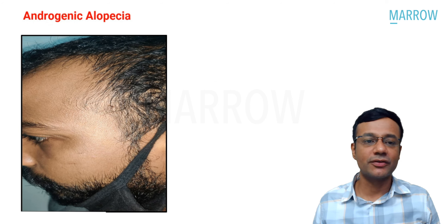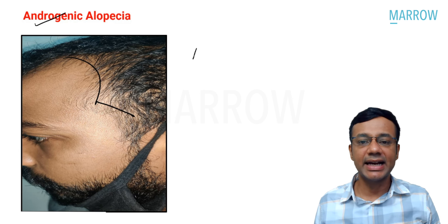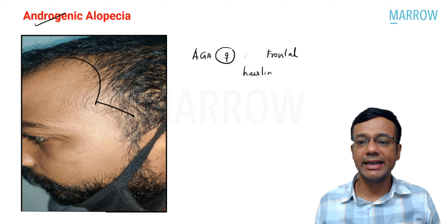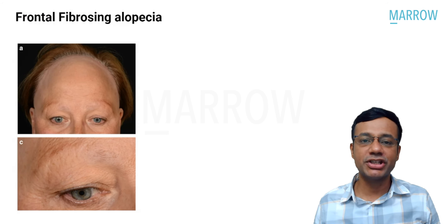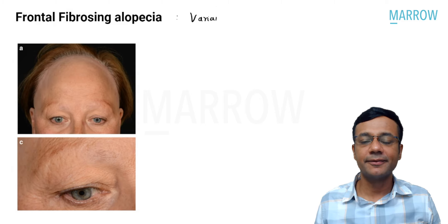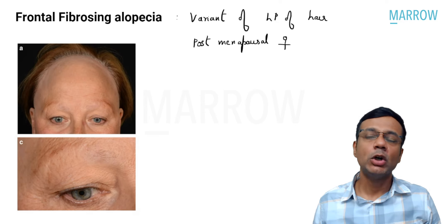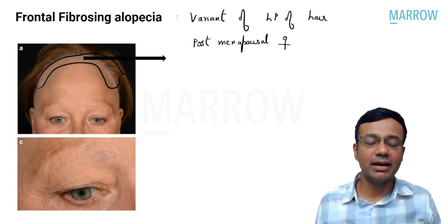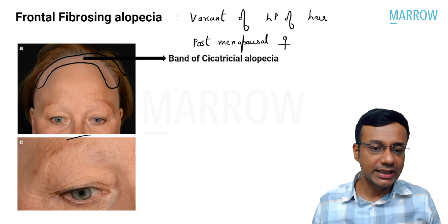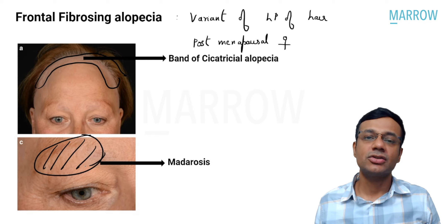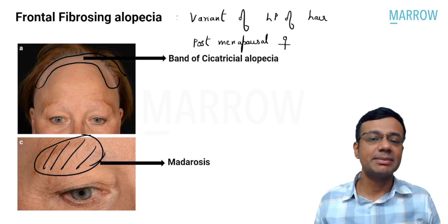Androgenetic alopecia is caused by androgen and genetic factors. The male pattern shows frontotemporal recession and balding of the vertex. In women, the frontal hairline is maintained — an important differentiating point. Frontal fibrosing alopecia is a variant of lichen planopilaris, usually seen in post-menopausal women. Key features are a band-like area of scarring alopecia and association with madarosis.